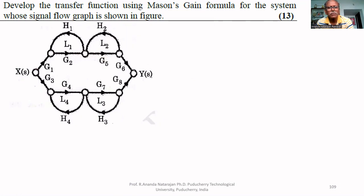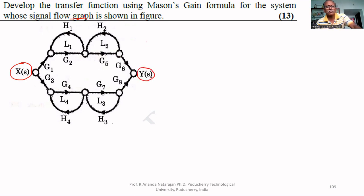Develop the transfer function using Mason's gain formula for the system whose signal flow graph is shown in the figure. The input is X(s) and the output is Y(s). This problem will be useful to understand Mason's gain formula.